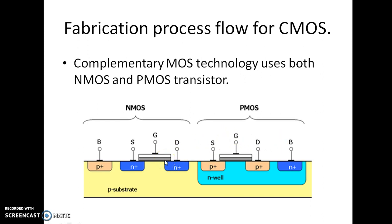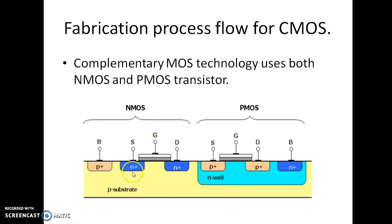We know for NMOS transistor we require P-type substrate, and for PMOS transistor we require N-type substrate. So in this case, first of all we take a P-type substrate in which we create an N-well. So here we implement the N-type MOSFET in P-type substrate and the P-type MOSFET in the N-well.